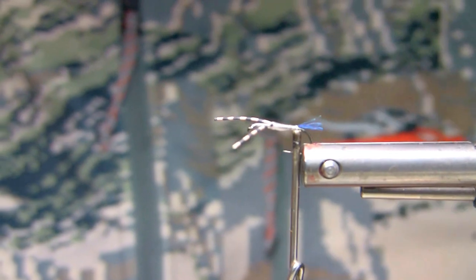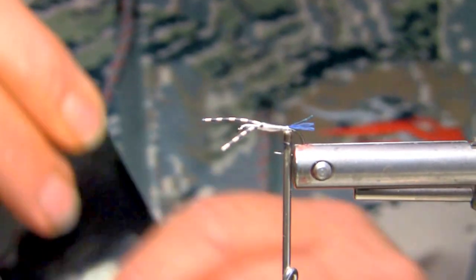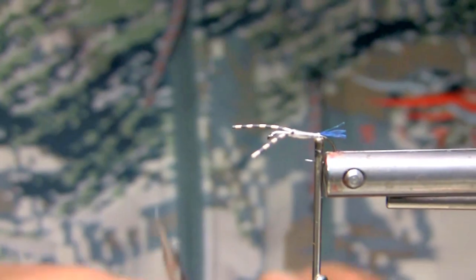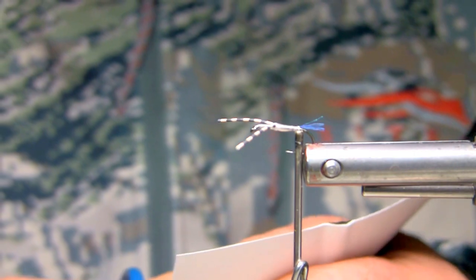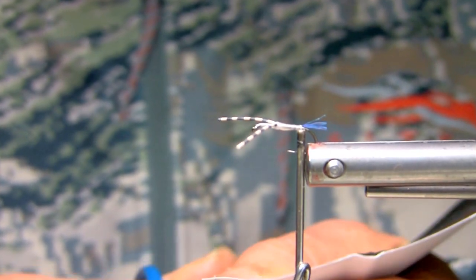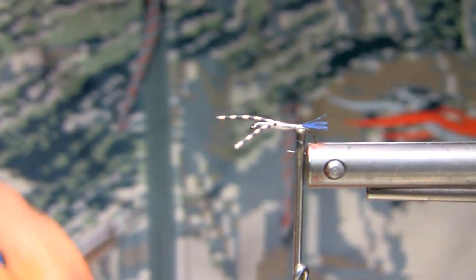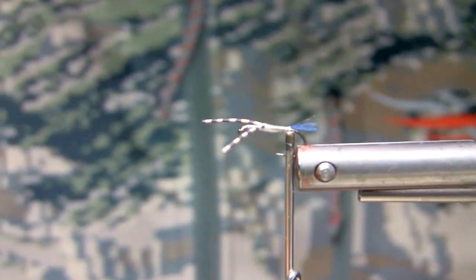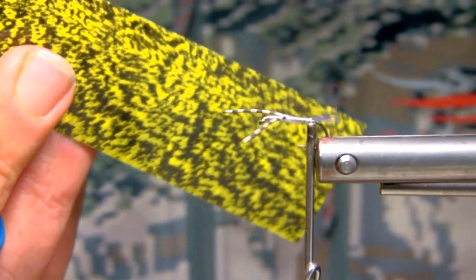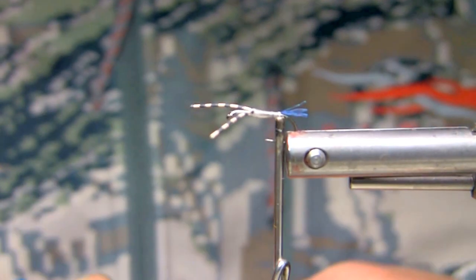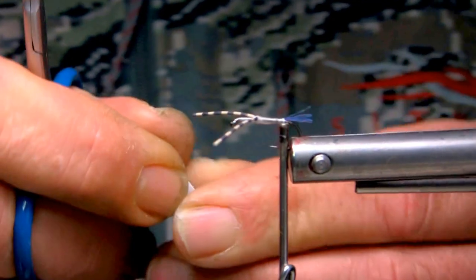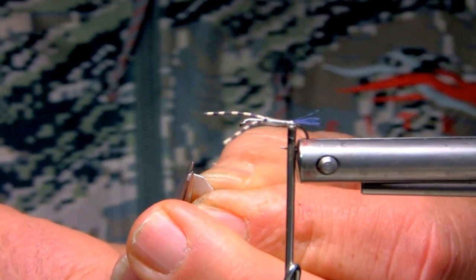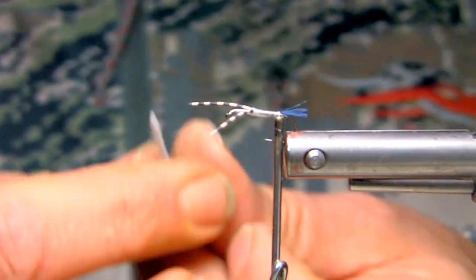The shell back is generally, we use nymph skin or you can use pearl scud material. But I like the nymph skin, I just cut it into small manageable strips. And this will be a black version of course. You can use a mottled version if you choose, it's up to you. And I'll just taper the end slightly on this material.